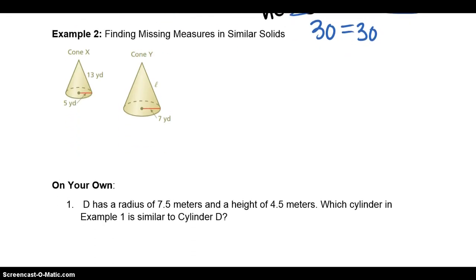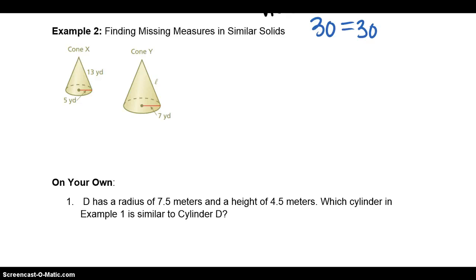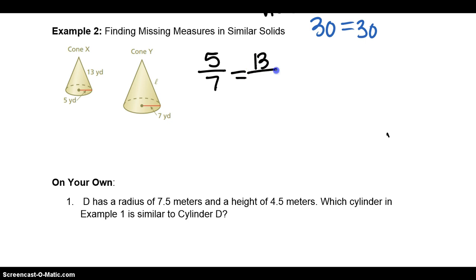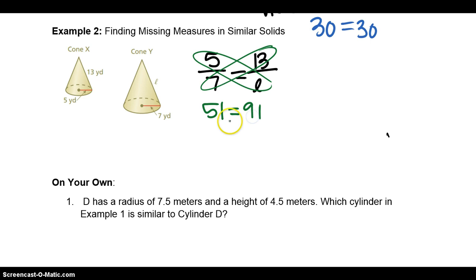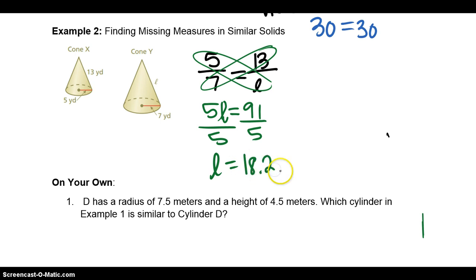In example 2, we find a missing measurement in a similar solid. Since the cones are similar, their dimensions are proportional. The radius over the radius equals the slant height over the missing slant height: 5 over 7 equals 13 over L. Using cross products: 5L equals 13 times 7, which is 91. Divide both sides by 5, and the slant height equals 18.2 yards.